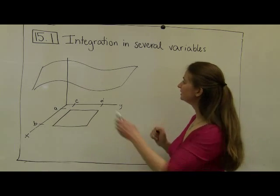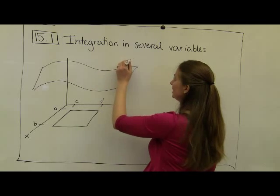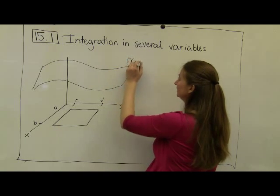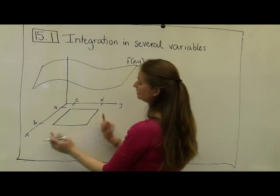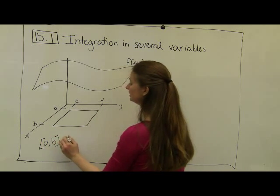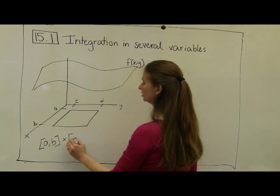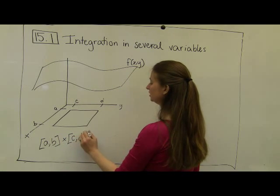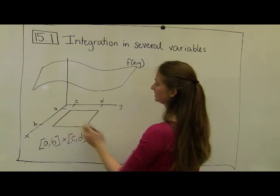So let's think of this sheet up here as my function f(x,y), and here I have my rectangular region. In this case, the rectangular region is given by the interval [a,b] along the x-axis crossed with the interval [c,d] along the y-axis, as I have this labeled.